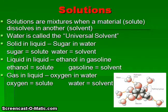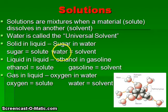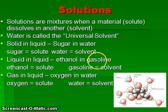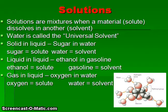Solutions are mixtures formed when a solute dissolves in a solvent. Water is typically called the universal solvent. Examples include a solid dissolved in a liquid, such as sugar (solute) in water (solvent), and a liquid dissolved in a liquid, such as ethanol (solute) in gasoline (solvent). When two liquids form a solution, the solute is present in the smaller amount and the solvent in the larger amount. It is also possible to have gases dissolved in liquids — for example, oxygen dissolved in water in a fish tank.